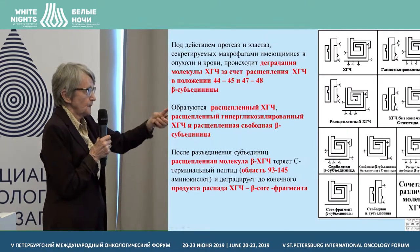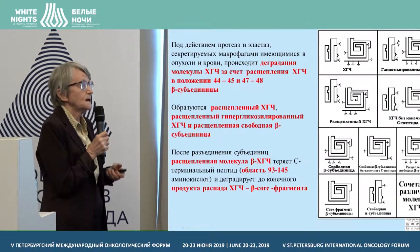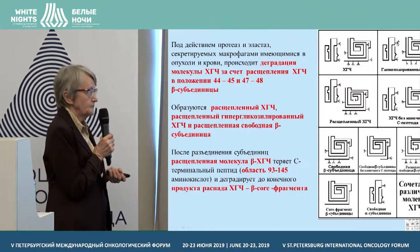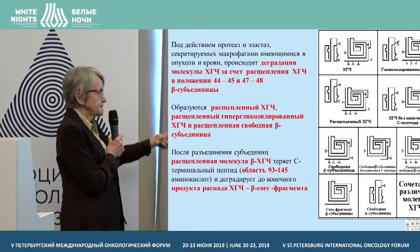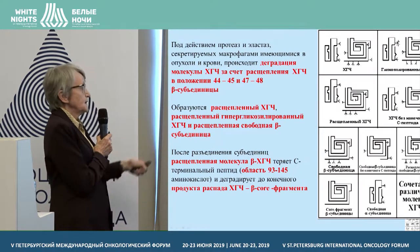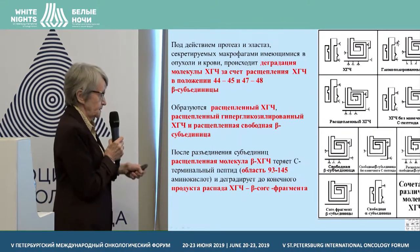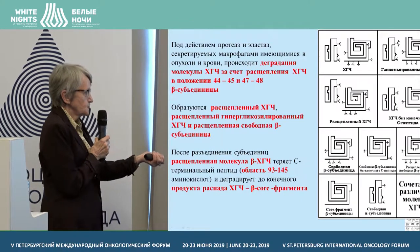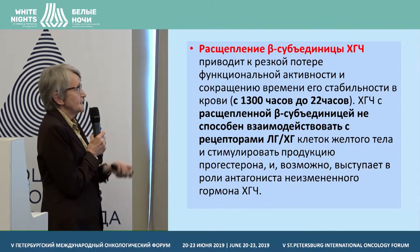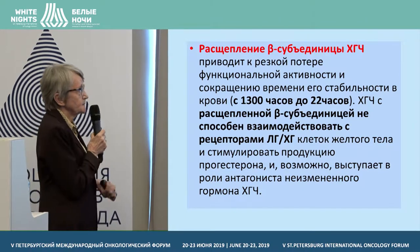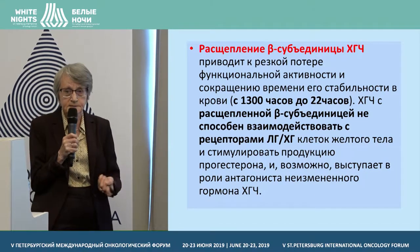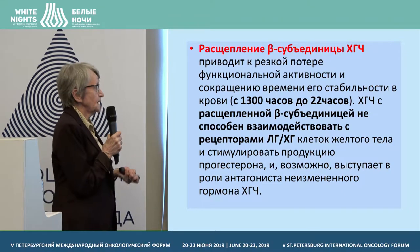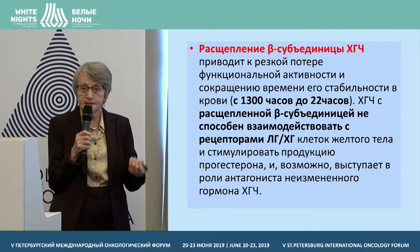After this splitting and hyperglycosylation, there is formation of a separate type of subunit of chorionic gonadotropin. The final splitting, when the beta subunit also loses its C-terminal tail, produces the final product — beta-core fragments — which can be detected in the urine. The splitting of beta subunits and hyperglycosylation results in functional changes of hormonal activity, and its stability in blood circulation reduces from 1,300 hours to only 22.